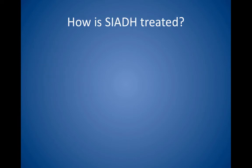How is SIADH treated? Treat with water restriction — stop intravenous fluids and restrict oral fluid intake. For the purposes of the Step 2 exam, do not give hypertonic saline unless the patient is actively having seizures, as you may cause brainstem damage or central pontine myelinolysis from too rapid correction of the sodium level. Demeclocycline is sometimes used to treat SIADH if water restriction fails, because it induces nephrogenic diabetes insipidus, which allows the patient to eliminate free water.